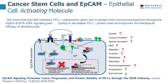In healthy cells, EpCAM is involved in cell signaling, migration, proliferation, and differentiation. However, in tumor cells, EpCAM appears to be involved in tumorigenesis and metastasis of carcinomas. In this paper, they found that EpCAM-mediated PD-L1 stabilization gives rise to escape from immune surveillance.